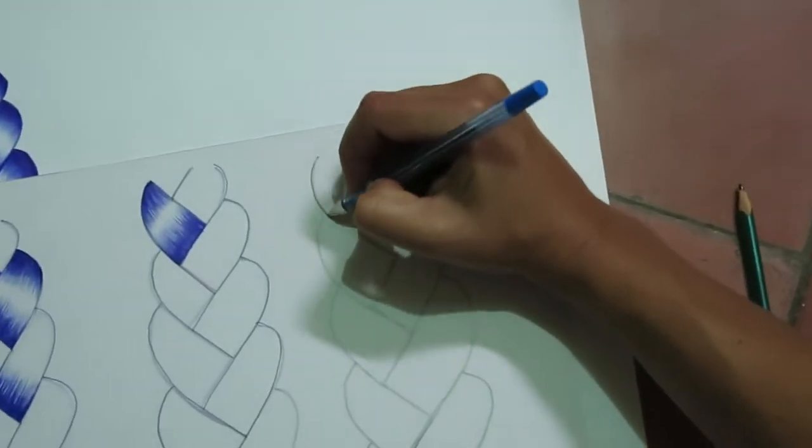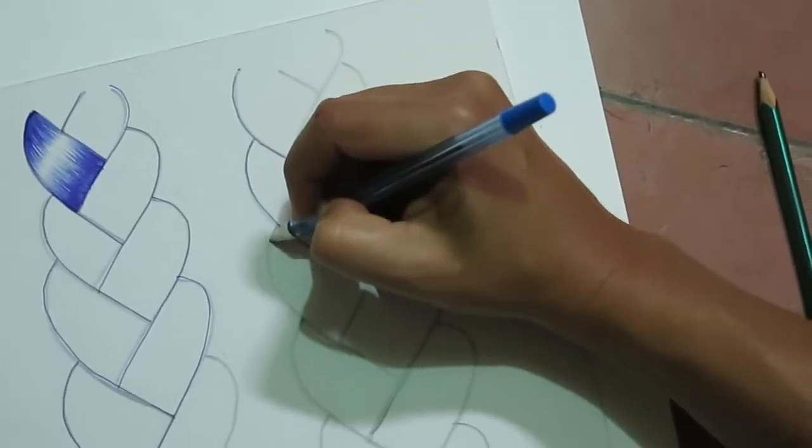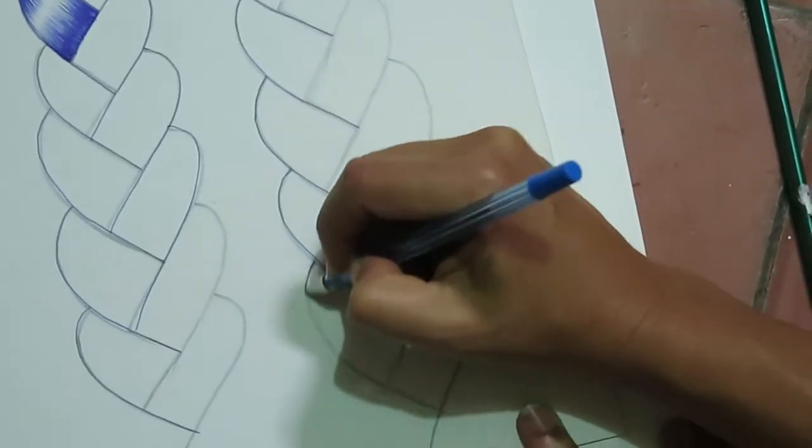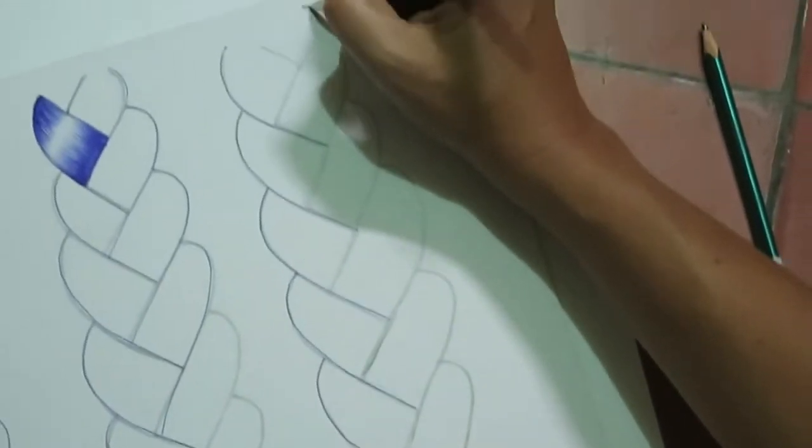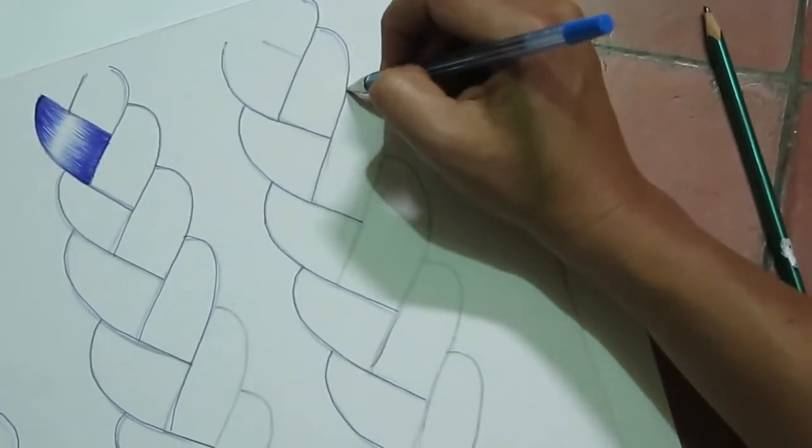But then take your pen, go round the same way. You can even start like this if you want. Go round. And then the other side. You get the idea.